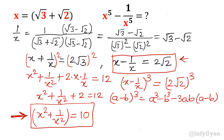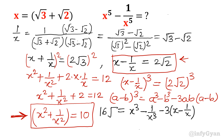Applying the formula: x cube minus 1 over x cube minus 3 times x times 1 over x times (x minus 1 over x). The x times 1/x cancels to 1, so we get minus 3 times (x minus 1/x). The value of x minus 1 over x is 2 root 2. And (2 root 2) cubed: 2 cubed is 8, root 2 cubed is 2 root 2, so 8 times 2 root 2 equals 16 root 2. Substituting, the remaining term is minus 3 times 2 root 2, which is 6 root 2.